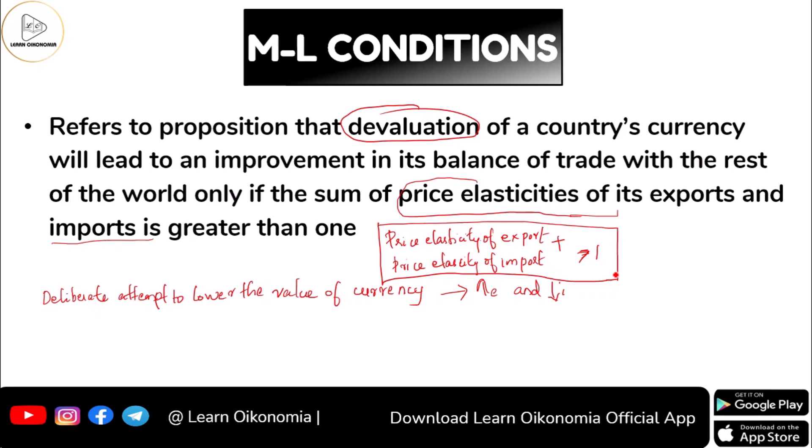The balance of trade involves the exports and imports of goods — it deals with all visible trade. Balance of trade means visible trade, dealing with the export of goods and import of goods only. We do not consider invisible services here, and we do not consider any transfer receipts or payments — only visible trade, only export of goods and import of goods.